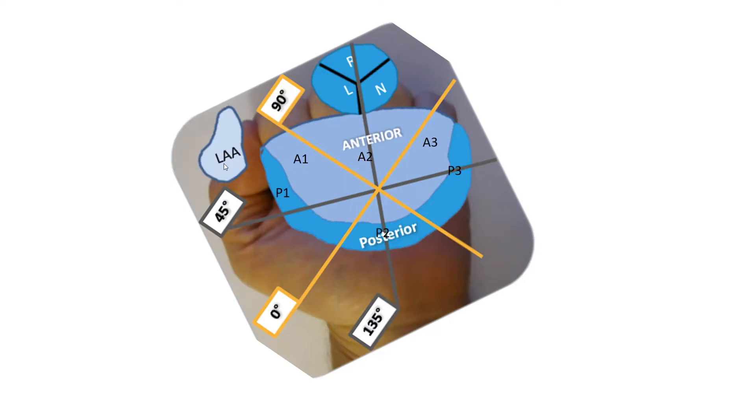On this side, closest to the left atrial appendage, we have our A1 segment of the anterior leaflet and P1 segment of the posterior. In the middle, we have our A2 segment and our correspondent P2 segment. And further medially, we have A3 and P3.